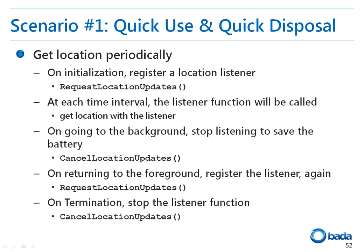Let's see how we can use the LocationProvider class. The first method is acquiring the location on a regular basis using the LocationProvider class. Since this method consumes a lot of resources, using this function widely is not recommended. To use this method, call the GetRequestLocationUpdates function during the initialization. Then add the listener. The listener function in the listener object is called periodically, and you can get the location through the listener. If the application changes to the background, the location update operation is cancelled using the CancelLocationUpdates function to save battery power.